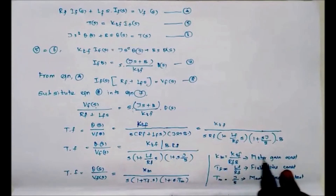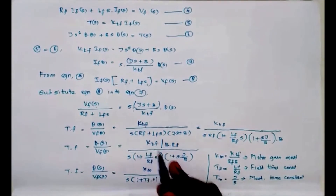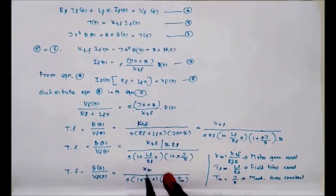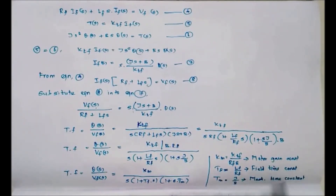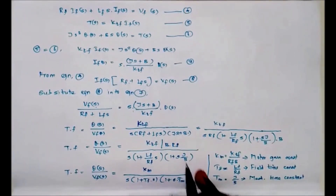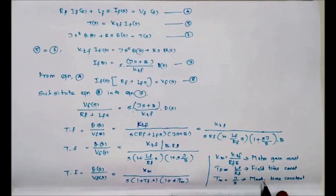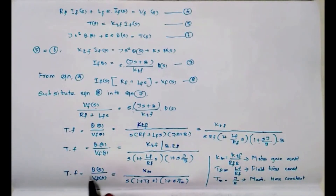Here Lf/Rf is considered as Tf, which is the field time constant. J/B is considered as Tm, which is the mechanical time constant. This is our final required transfer function of a field controlled DC motor.